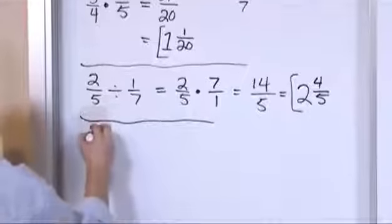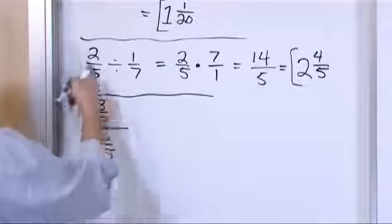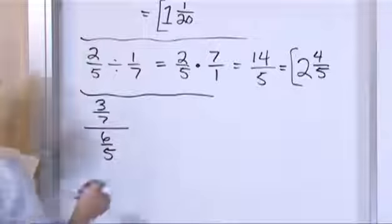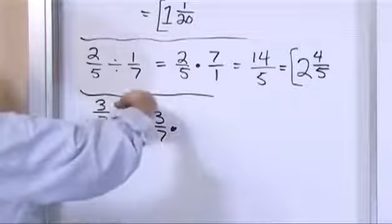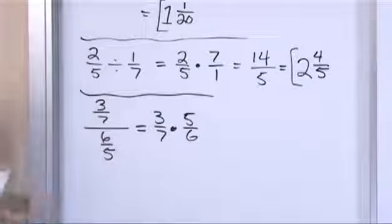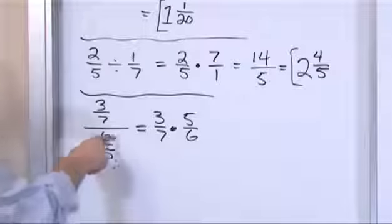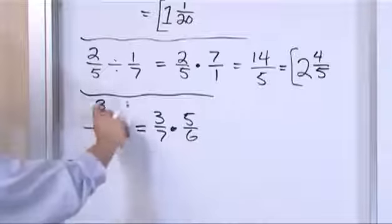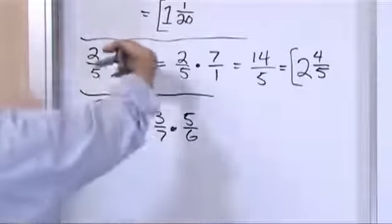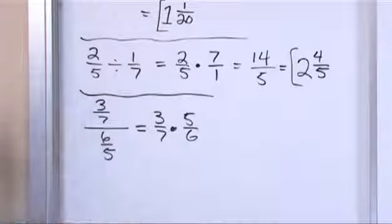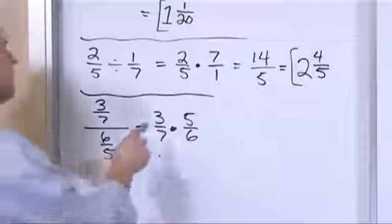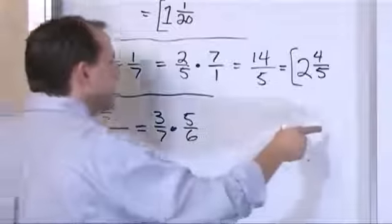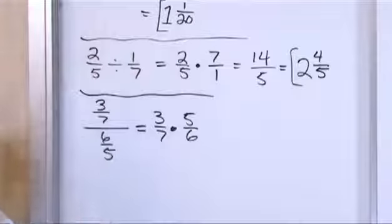Now what if we have 3 sevenths divided by 6 fifths — I'm just choosing to write it a little differently every now and then to show you it's the same thing. So you can write this as 3 sevenths, change this division into a multiplication, and take the second fraction and flip it over to multiply: 5 sixths. I like to think of this as a monkey bars image — this fraction is kind of hanging on to the bottom, and to change this division into a multiplication, it has to flip itself upside down to be multiplied. But you have 3 sevenths times 5 sixths. You could multiply 5 times 3 to get 15, and 7 times 6 for the denominator, and simplify that fraction to get the answer.